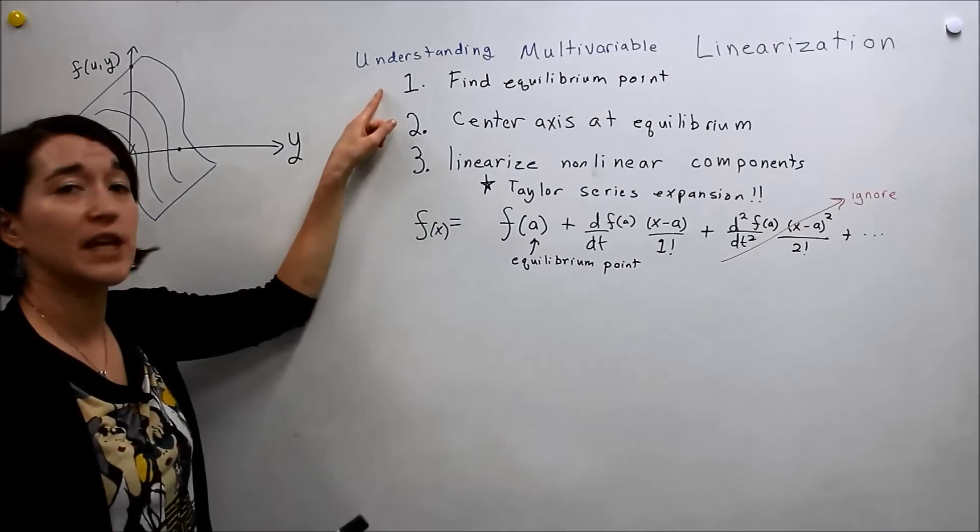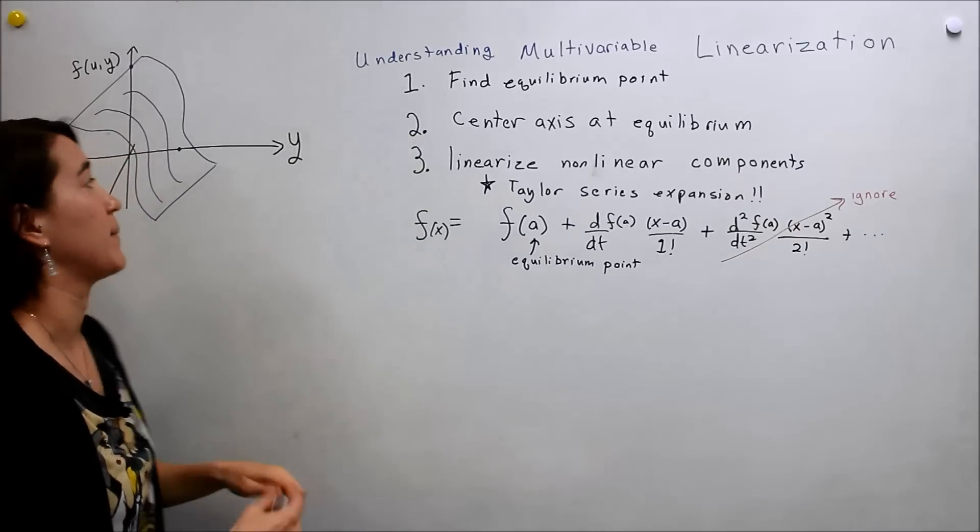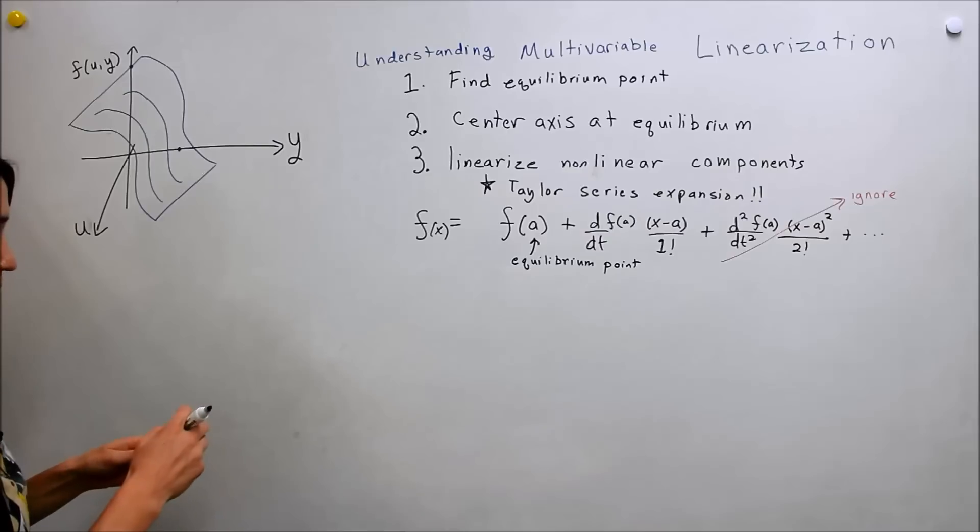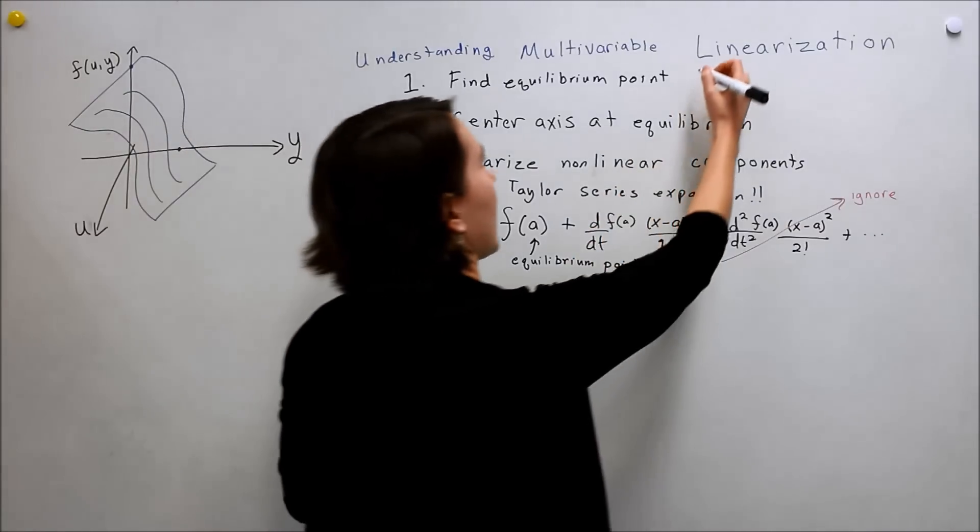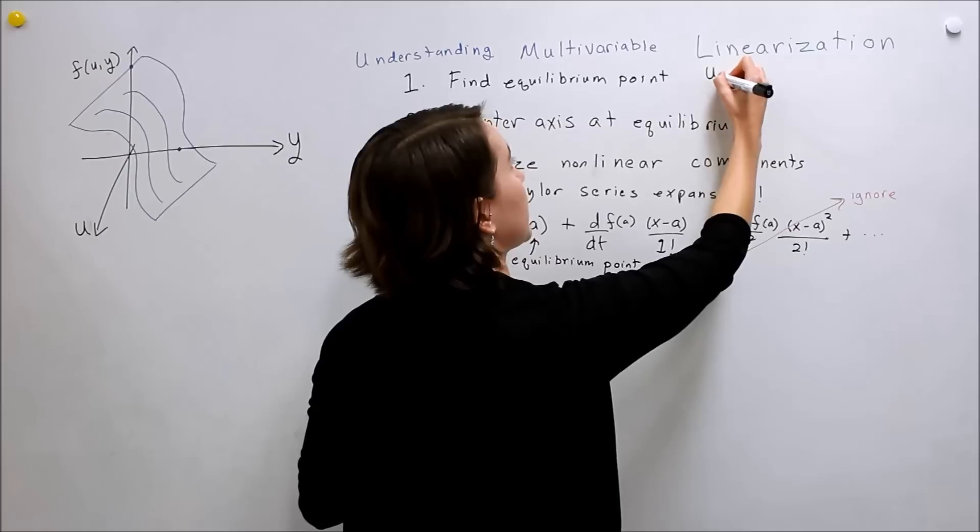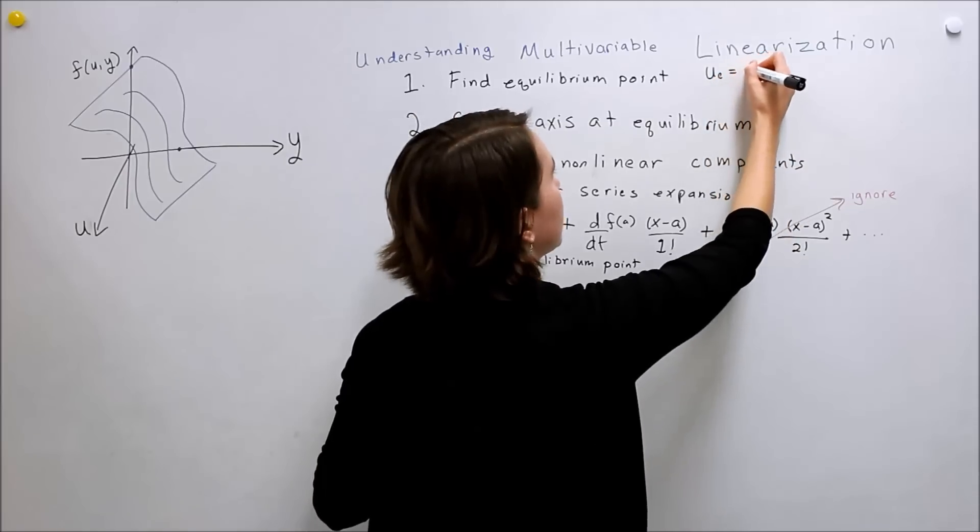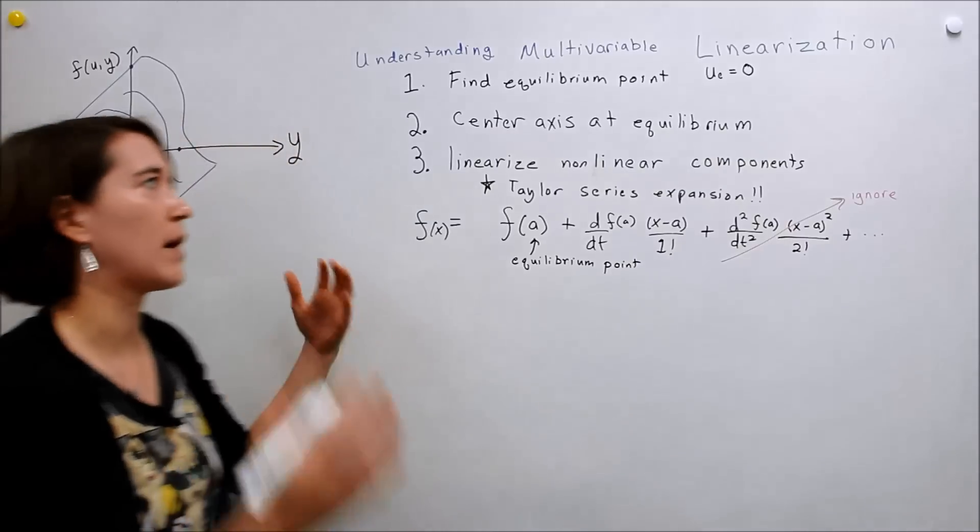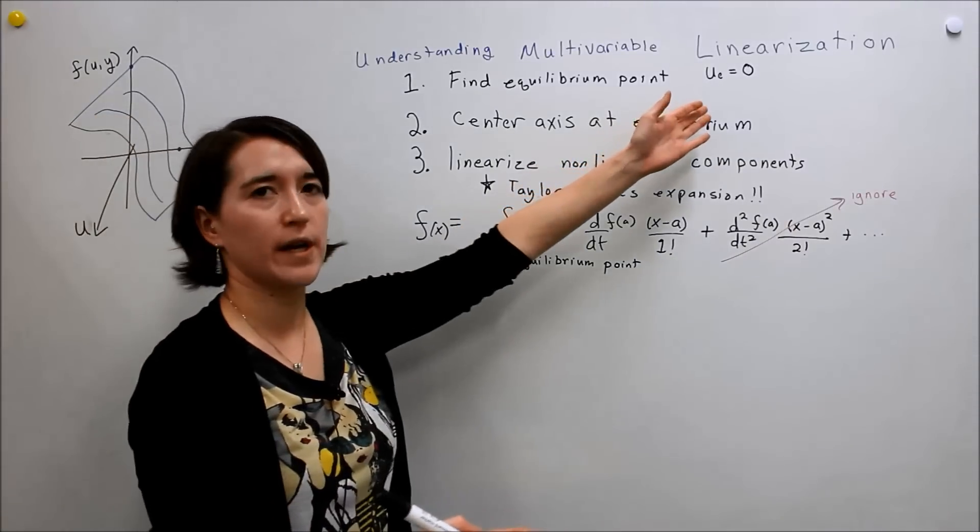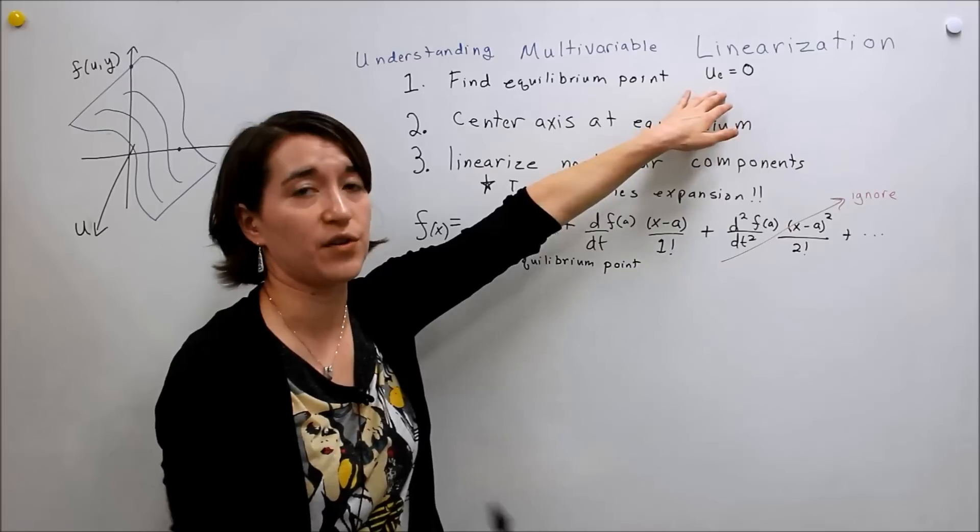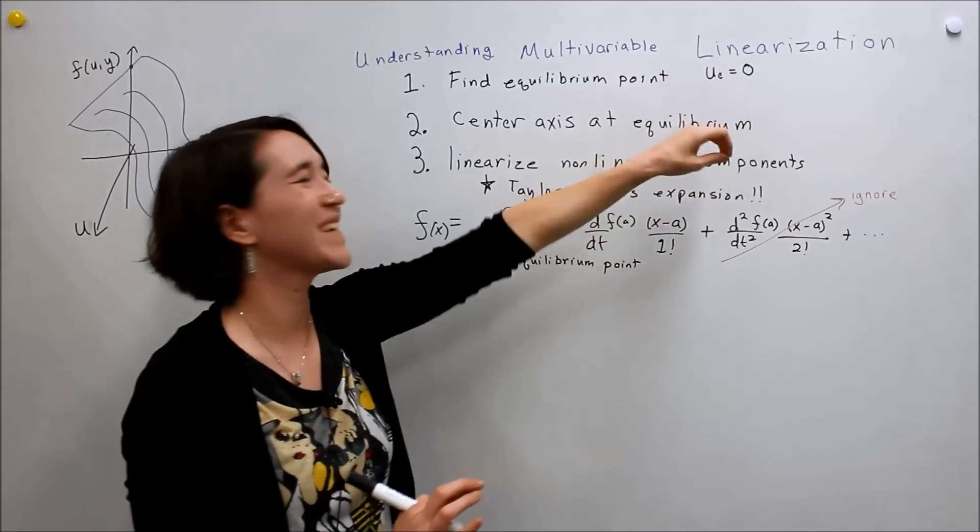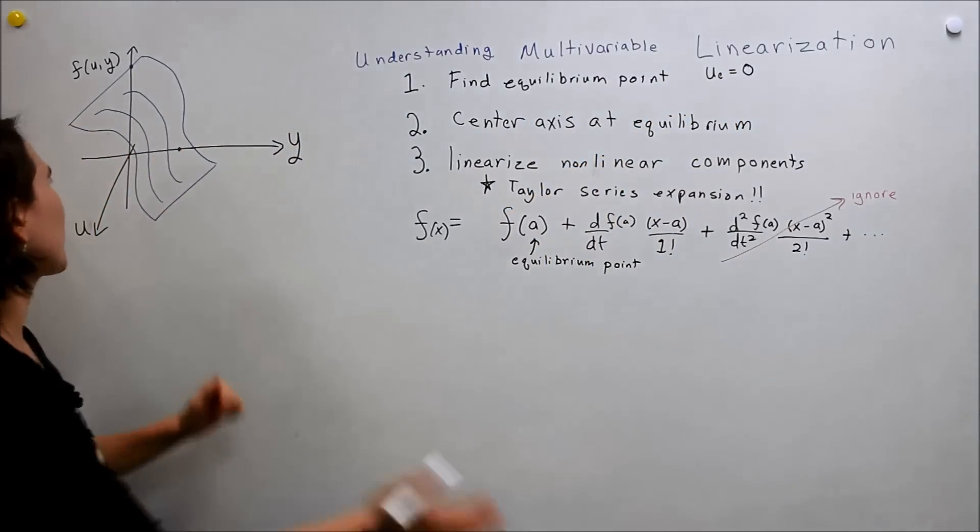Well first we have to find the equilibrium points, same as last time. But this time, u is usually the input. We almost always say that the input, so we'll call it u_e, the equilibrium point, is zero. If a problem is stated as a different point, then you would implement it with that equilibrium point. But we're almost always going to use u_e is zero, okay?